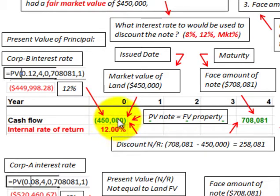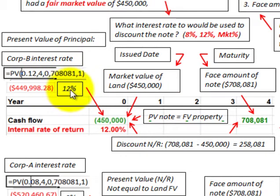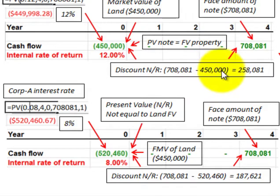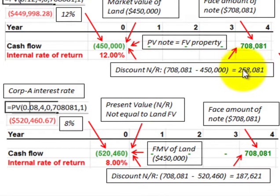We can stop right here and determine that 12% is the interest rate we should be using, because the market value of the land at $450,000 equals the present value of our note at 12%. The discount on this note receivable is $708,081 less the $450,000 fair market value of the land, which equals the present value of the note, giving us a discount of $258,081 at the 12% rate.